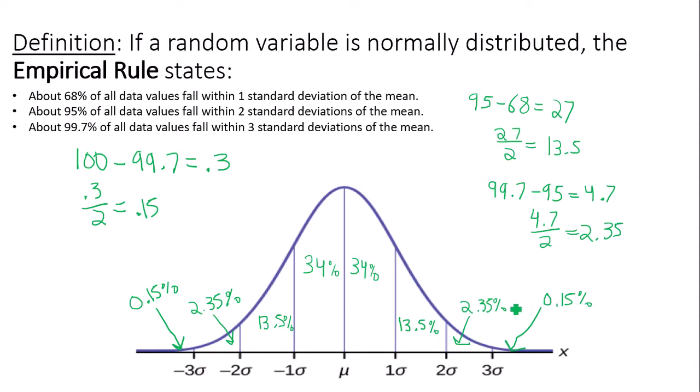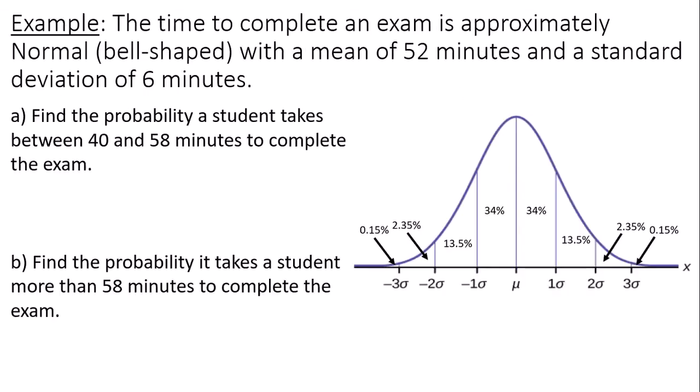So we can use the empirical rule to answer questions. It gives us really good approximations for the answers. So the time to complete an exam is approximately normal or bell shaped with a mean of 52 minutes and a standard deviation of 6 minutes. Find the probability a student takes between 40 and 58 minutes to complete the exam, then find the probability it takes a student more than 58 minutes to complete the exam.